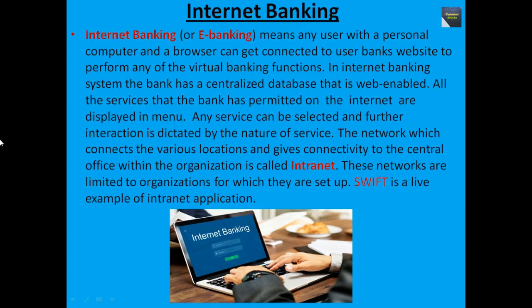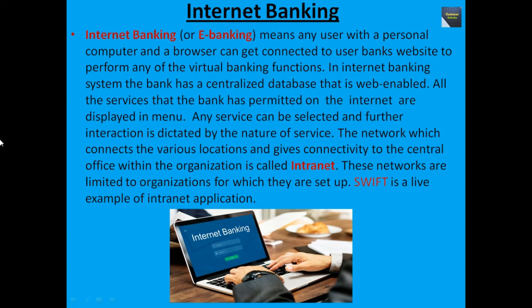Now we talk about internet banking. Internet banking, also known as e-banking, means any user with a personal computer and a browser can get connected to their bank's website to perform any of the virtual banking functions. In an internet banking system, the bank has a centralized database that is web-enabled. All the services that the bank has permitted on the internet are displayed in a menu. Any service can be selected and further interaction is dictated by the nature of the service. The network which connects the various locations and gives connectivity to the central office within the organization is called intranet. These networks are limited to organizations for which they are set up. SWIFT is a live example of an intranet application.